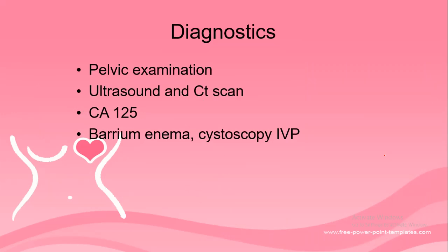For diagnostic tests, the doctor will perform a pelvic examination. An ultrasound or CT scan will be done to assess for the presence of a tumor mass in the pelvic area. The tumor marker for ovarian cancer is Cancer Antigen 125 (CA-125). A barium enema may also be performed with cystoscopy to visualize the lining of the pelvic area via X-ray.